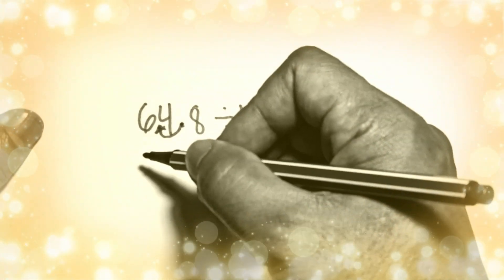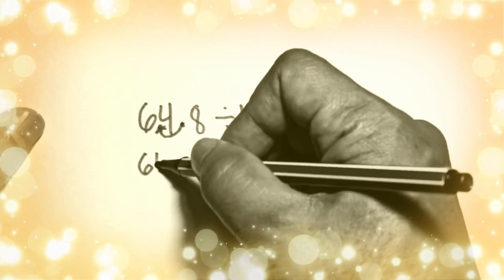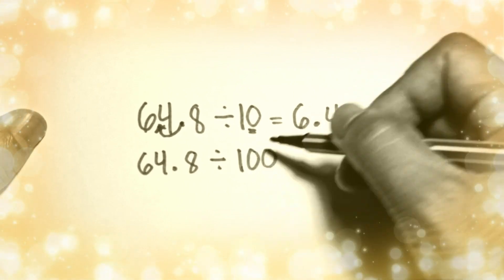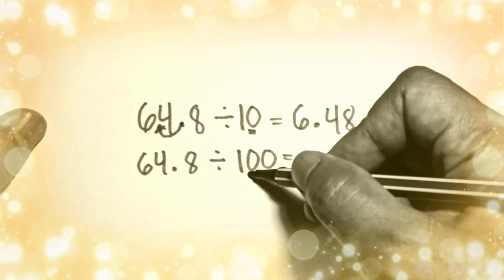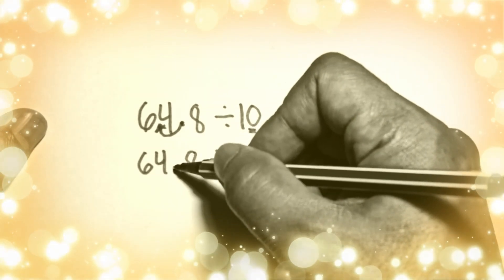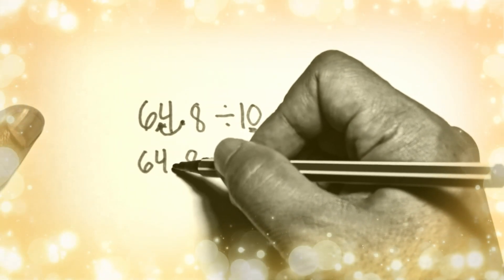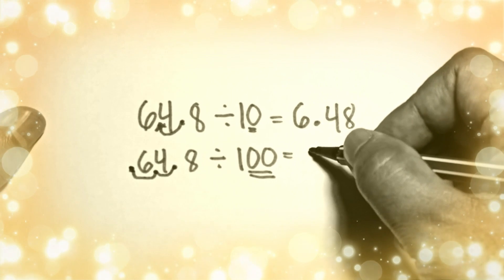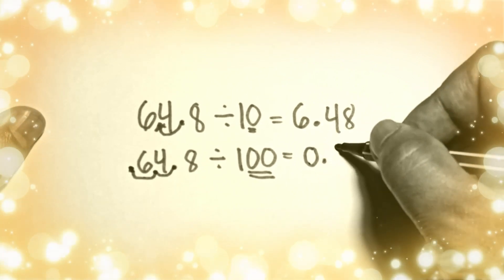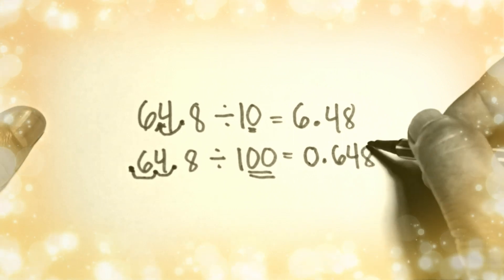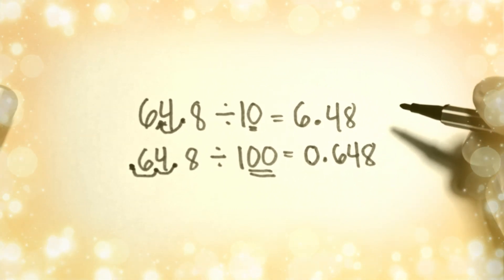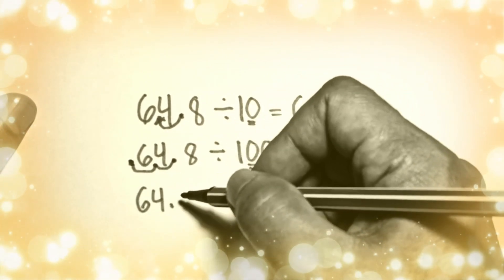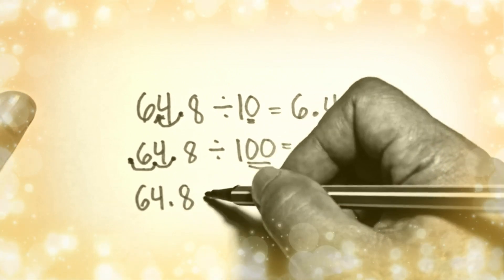If you are dividing 64.8 by 100, in 100 you have two zeros, so you move your decimal point twice going to the left — one, two — and your answer will become 0.648.